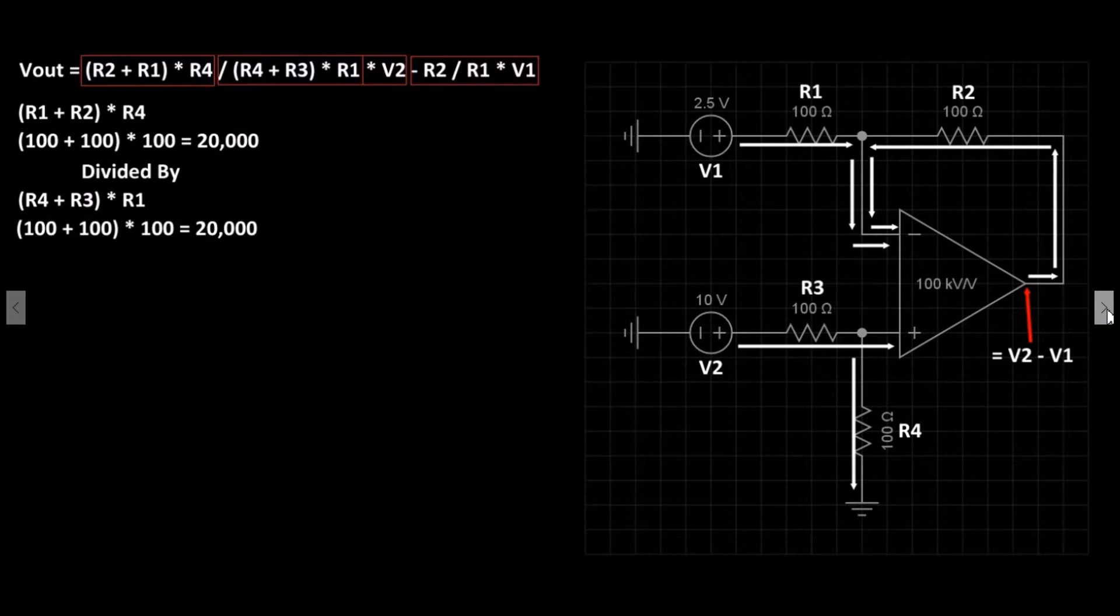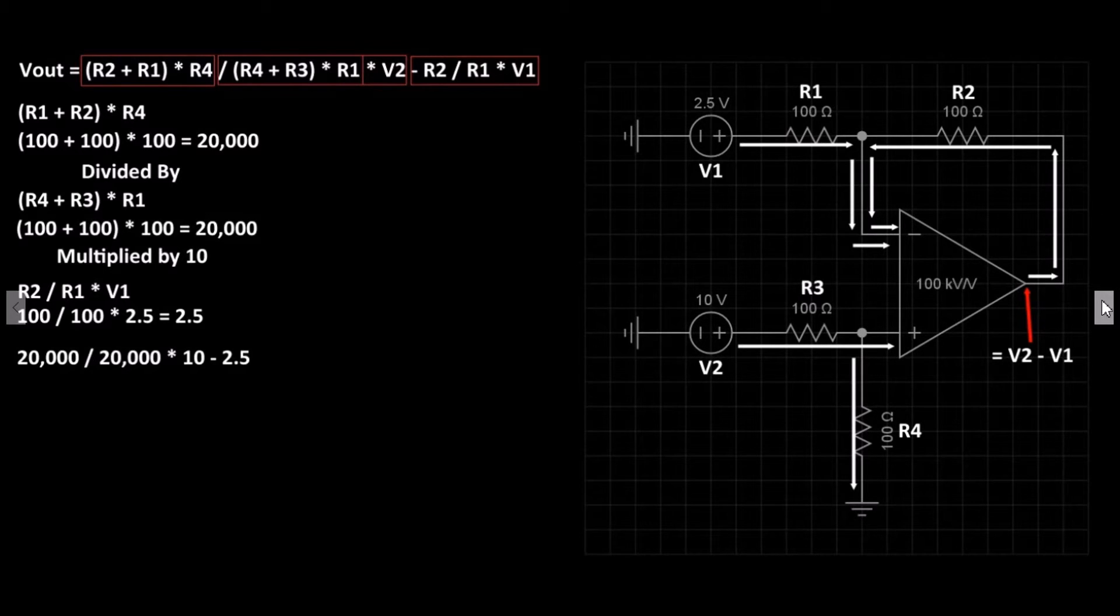We divide the two values then multiply by 10. The last part of the formula: R2 divided by R1 multiplied by V1. So the values are 100 divided by 100 multiplied by 2.5, which equals 2.5.